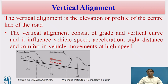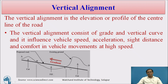As we know that once the horizontal alignment is completed, we need to design the vertical alignment. Vertical alignment is the elevation or profile of the center line of the road. So for whatever the designed horizontal line, we need to design this vertical profile. That includes the grades — we need to design the gradient and vertical parameters such as the vertical curves, the summit curves, valley curves, and sight distance. This influences the vertical gradient and influences the speed, acceleration, sight distance, and comfort in vehicle movements at high speeds.